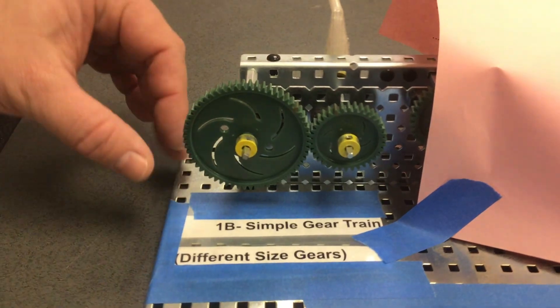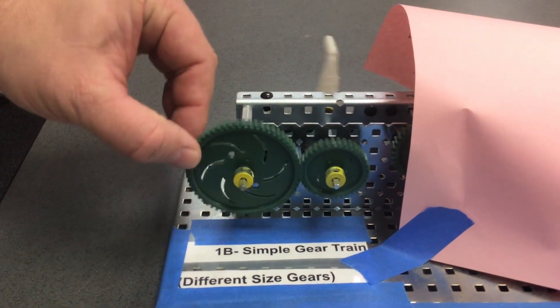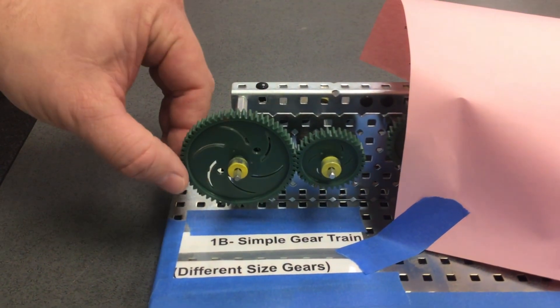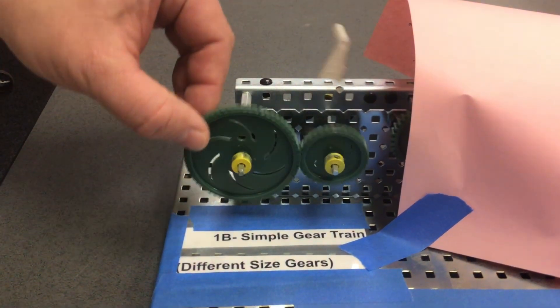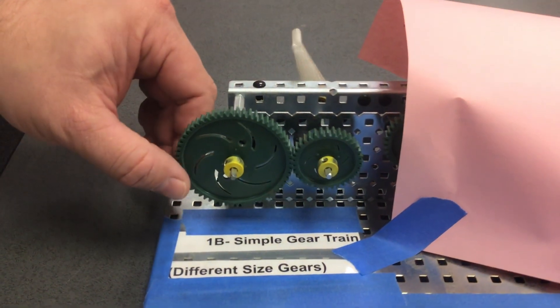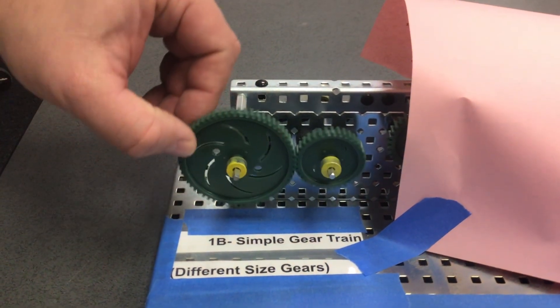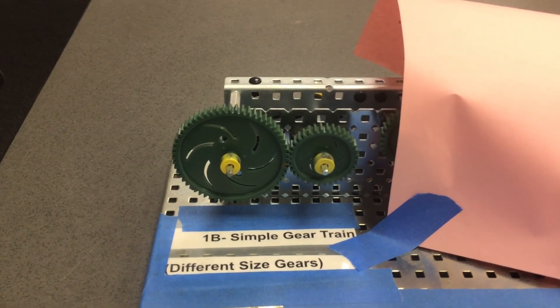The flow of power on this is reversible - I can turn the output and it makes the input gear turn. Notice that these turn in opposite directions. This is Simple Gear Train B.